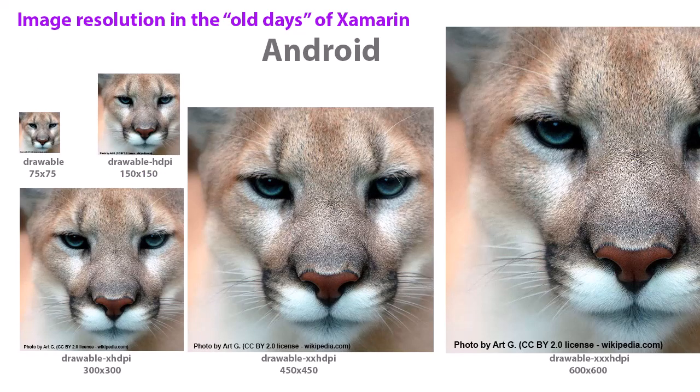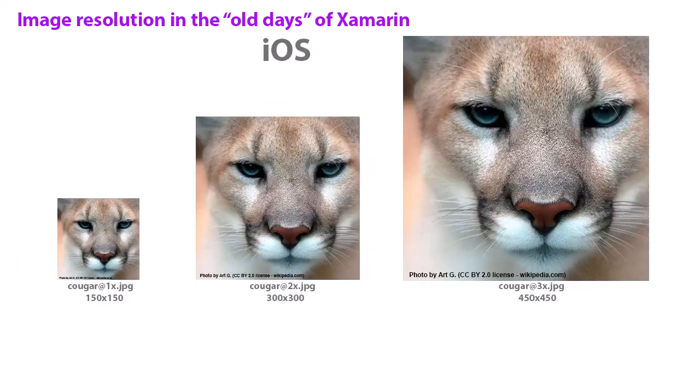In the old days of Xamarin, and even if you've taken our Kotlin Android Studio course or our iOS Swift course, you're aware that we've had to create different resolutions of images. In Android, traditionally we've created five different resolutions stored in different folders called Drawable, DrawableHDPI, DrawableXHDPI, and DrawableXXHDPI. On the iOS side, we created three versions named at 1x, at 2x, and at 3x. And on the Windows side, we also created three versions named .scale-100, .scale-200, and .scale-400 at the end of each file name.